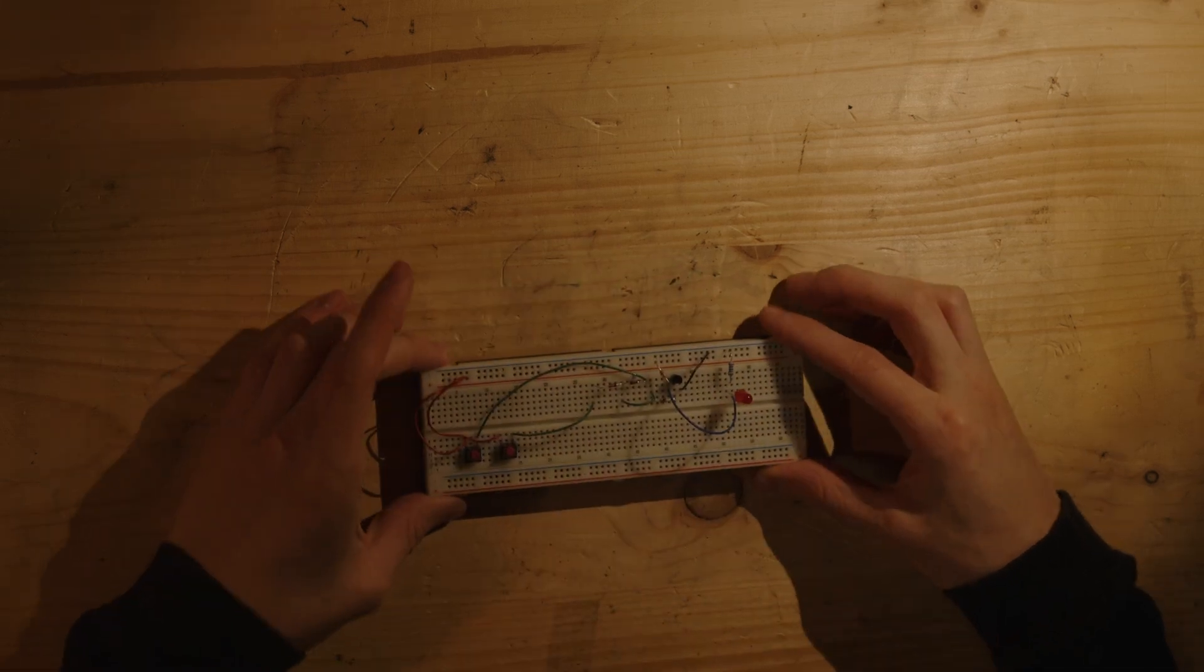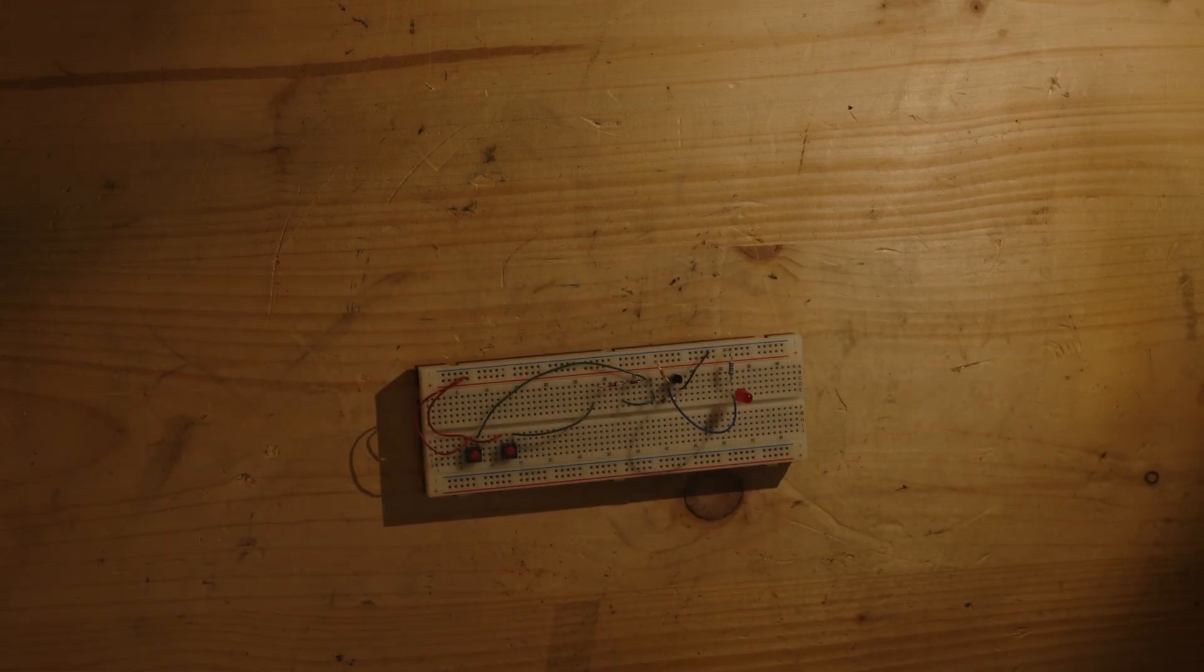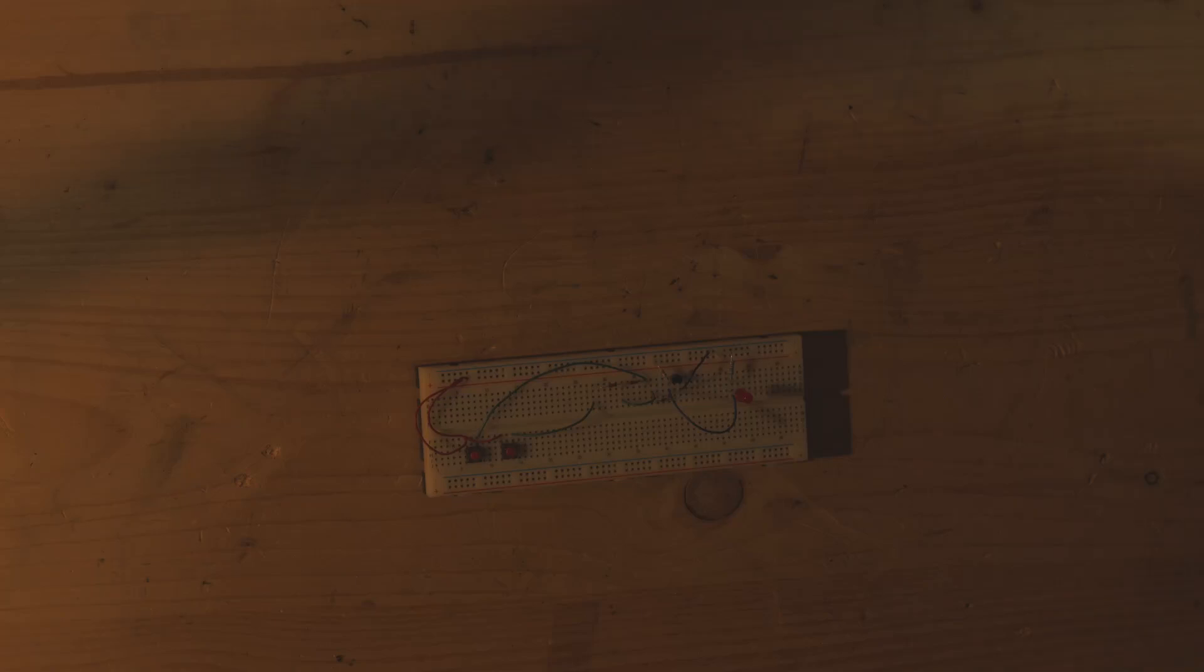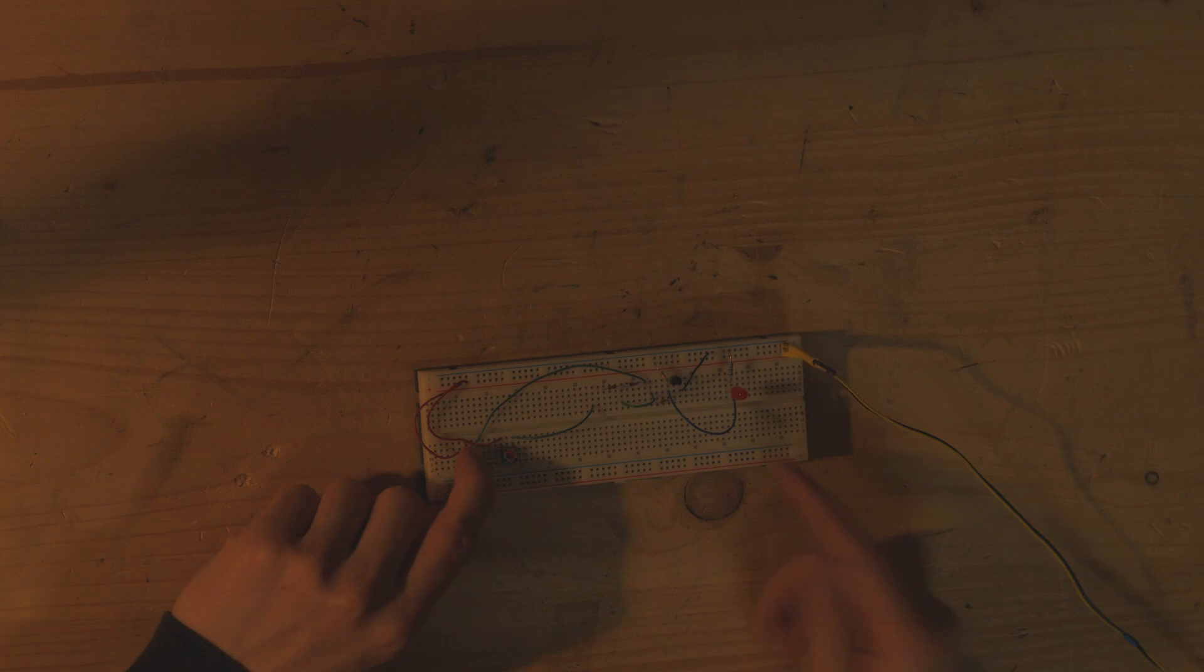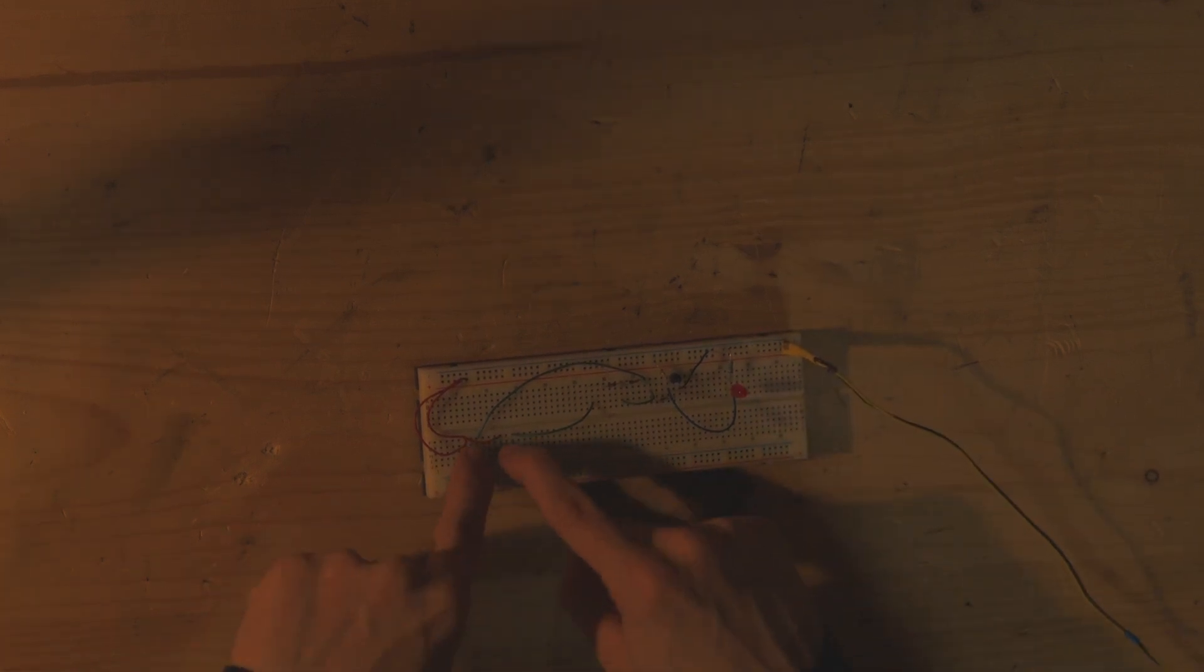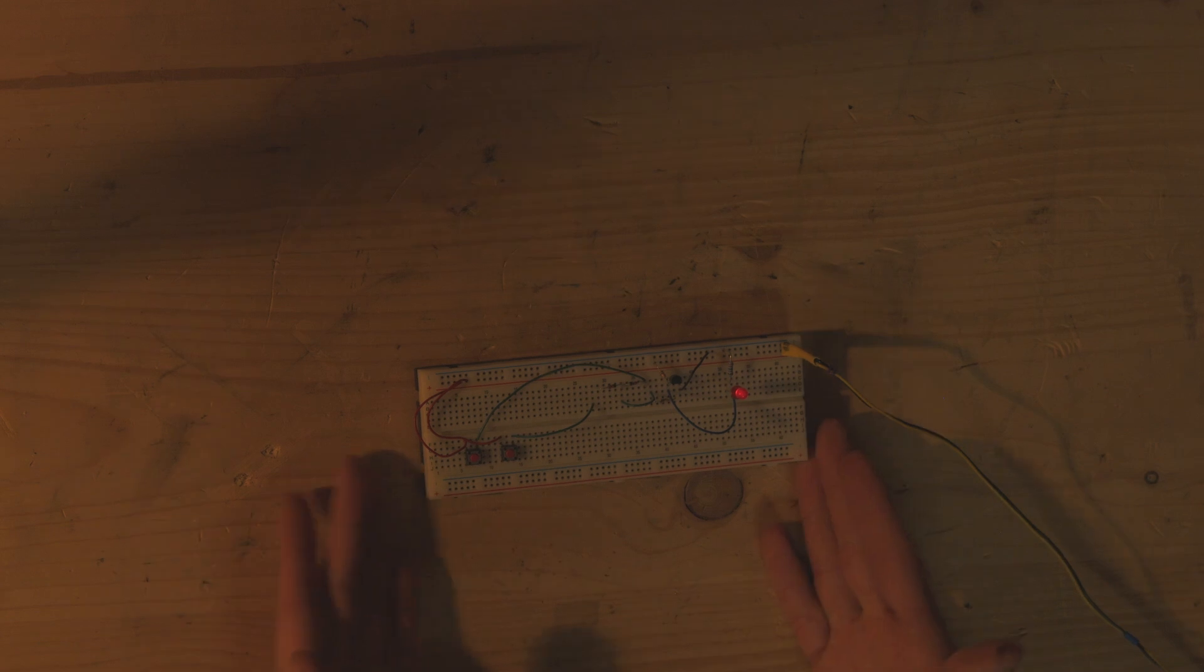And now if I hook up 24 volts we should again have an inverted OR gate so the LED is on. If I push one button the LED goes off if I push the other button the LED goes off if I push both buttons the LED goes off so we successfully built a NOR gate. To the next gate.